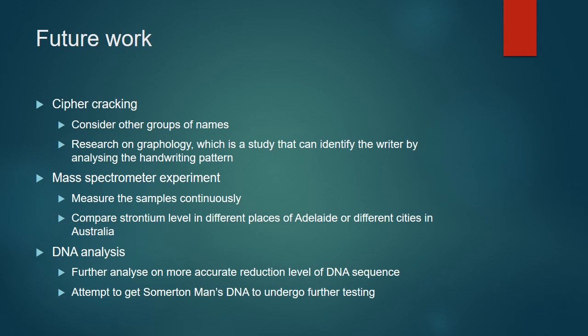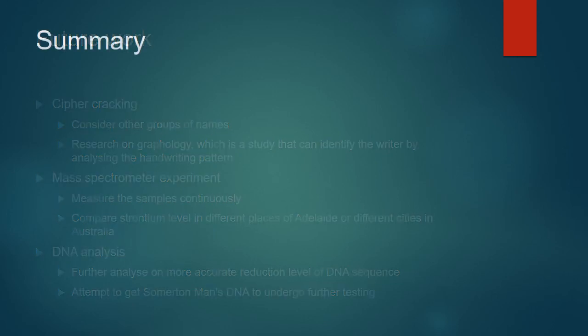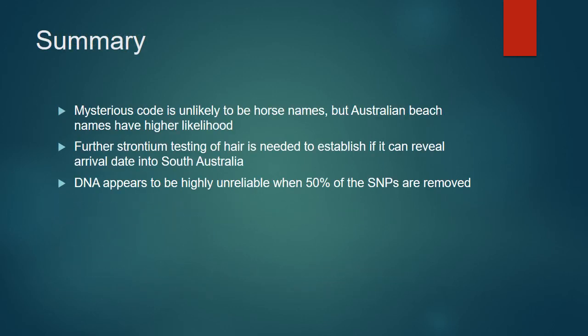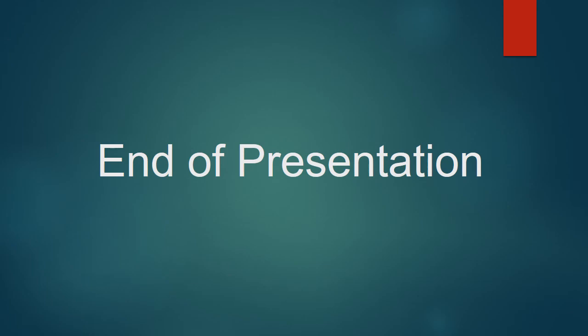To summarise: the mysterious code is unlikely to be horse names, but Australian beach names have a higher likelihood. Further strontium testing of hair is needed to establish arrival dates in South Australia. DNA is highly unreliable when 50% of the SNPs are removed. Thank you for listening.